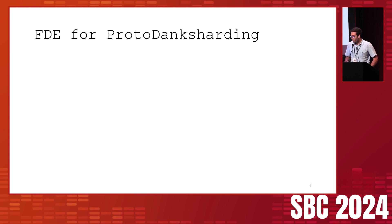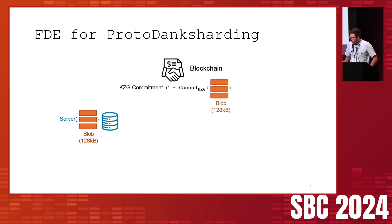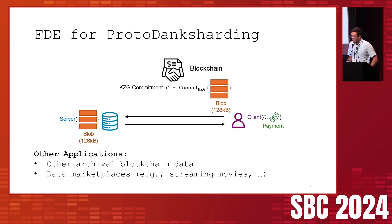We could use a fair data exchange scheme for proto-danksharding. In proto-danksharding, blob data is eventually kicked out of the chain but can be stored off-chain by volunteering servers. A KZG commitment to this blob data continues to live on Ethereum. We can use our FDE scheme to incentivize servers to keep storing the data by enabling clients to pay for it in an atomic and trust-free manner. Other applications include archival blockchain data and data marketplaces — for example, clients streaming movies purchased over the blockchain.